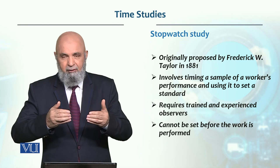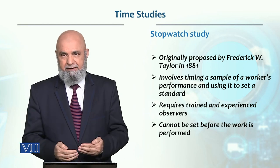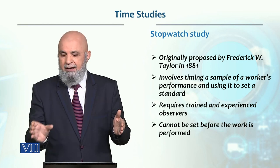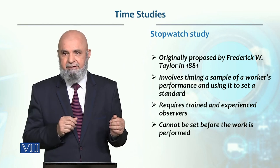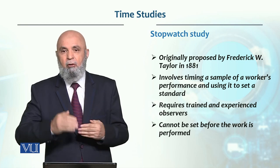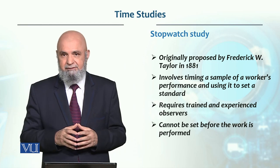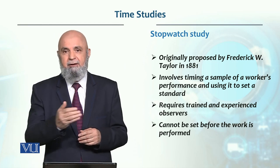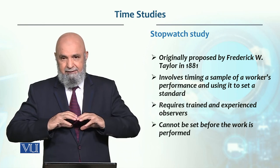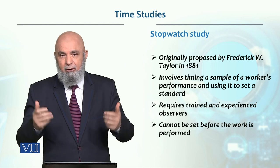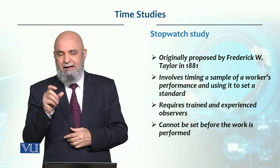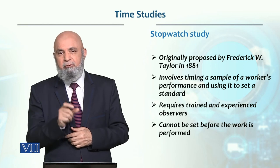تو یہ ایک worker ہے جو پورا job perform کرتا ہے، اور یہ different work elements ہیں۔ آپ ہر work element کا time separately note کرتے جائیں گے - پورے job کا نہیں۔ اگر وہ 10 tires change کرتا ہے تو 10 بار ہر work element کا time note کرنا ہے۔ Stopwatch کے ذریعے آپ each work element کا exact time determine کریں گے۔